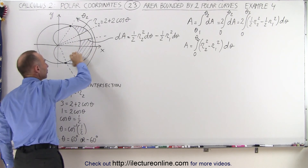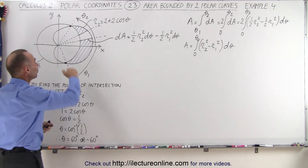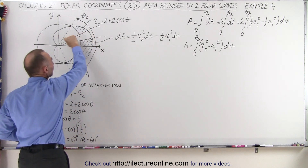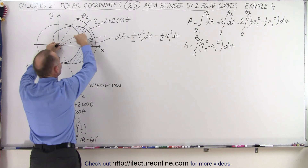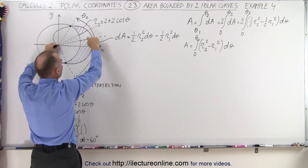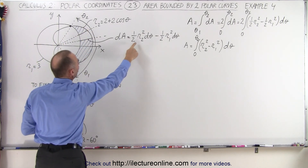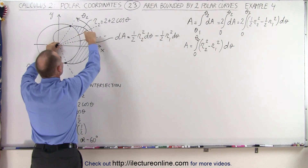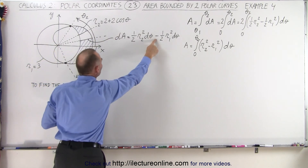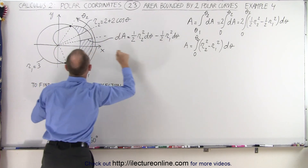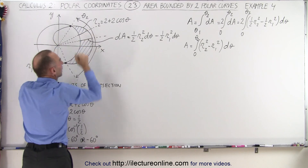We're trying to find the area defined by the region between these two curves. The approach is the same — we draw two radial lines and define the area in between as the small dA. To do that, we find the area of the entire cone-shaped region, then subtract the inner portion, so that the region between the curves remains.